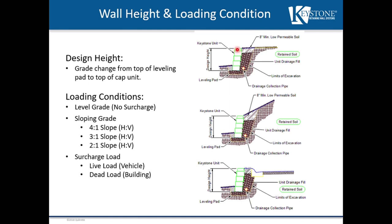Once we determine the design height of the retaining wall, we want to determine what type of loading condition the wall is going to see. Is it a level grade or no surcharge situation? Does it have some type of slope behind the retaining wall? Or is there some type of surcharge, such as a live load from vehicle traffic or a sidewalk, or a dead load from a building such as a shed or a garage?